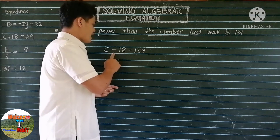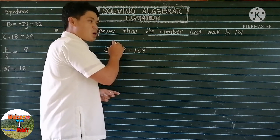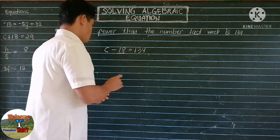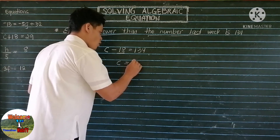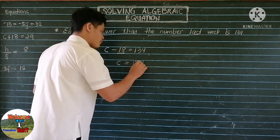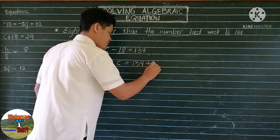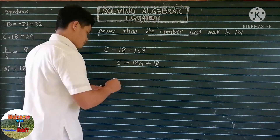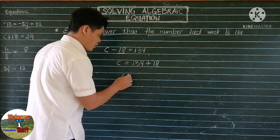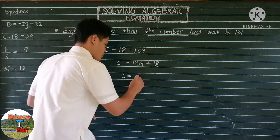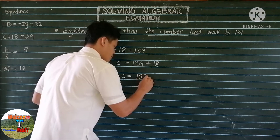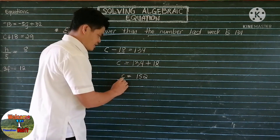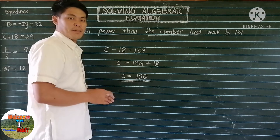Since the sign of 18 is negative, when we transpose 18 to the right side of the equal sign, it will become positive. So we have C equals 134 plus 18. So 134 plus 18 is equal to 152. This is our unknown number.